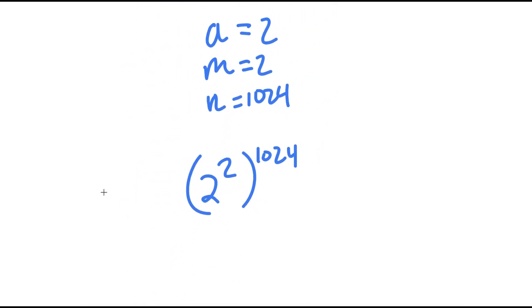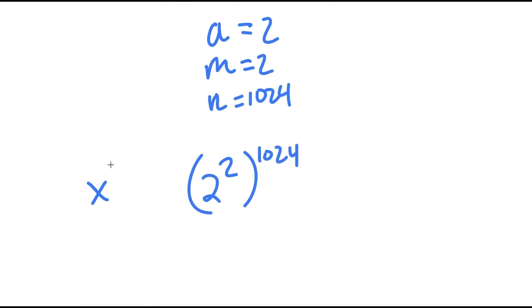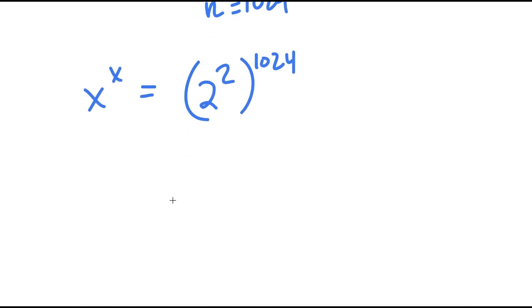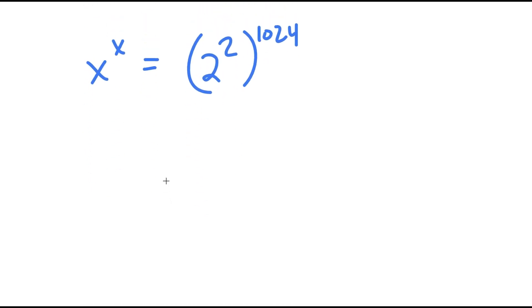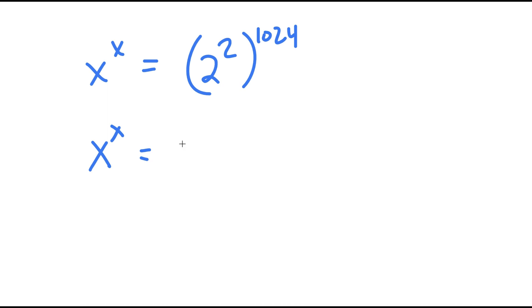And remember, this is equal to x to the power of x. Now, 2 to the power of 2 is equal to 4. So I have x to the power of x is equal to 4 to the power of 1024.